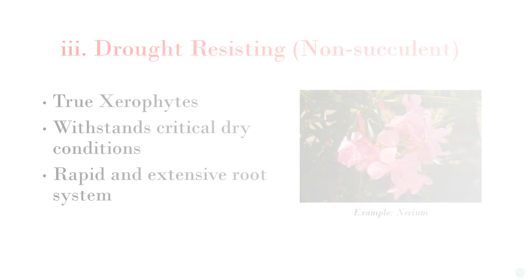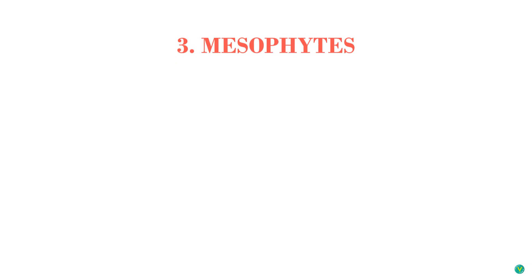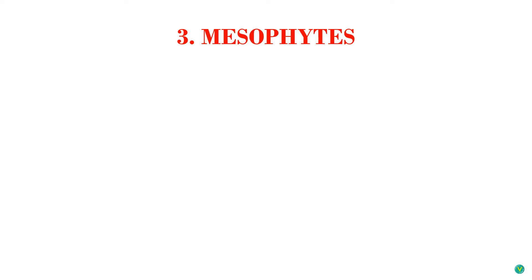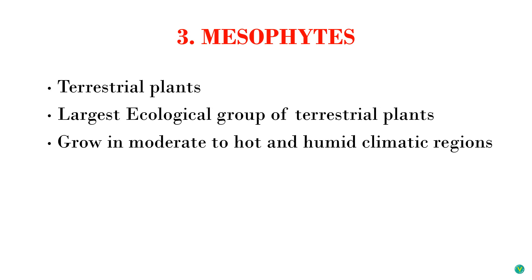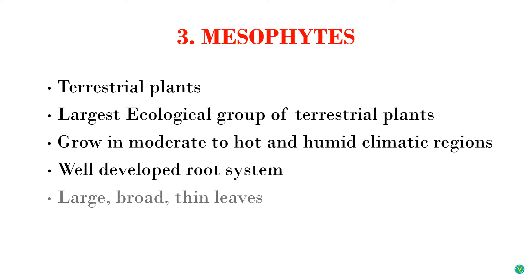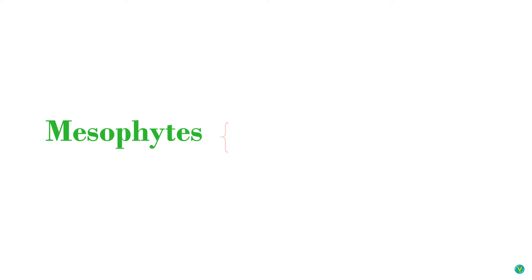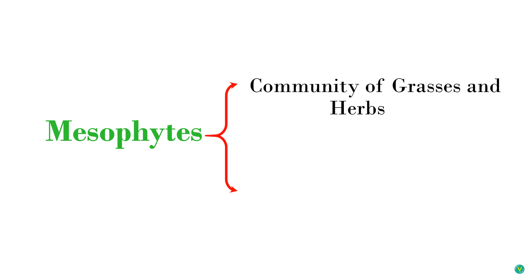The third group in the classification is mesophytes. Mesophytes are terrestrial plants requiring a moderate or average amount of moisture. They make up the largest ecological group of terrestrial plants. They grow under moderate to hot and humid climatic regions and have well-developed root systems. The leaves are generally large, broad, and thin with different shapes. There are two major communities of mesophytes: community of grasses and herbs, and community of woody plants.